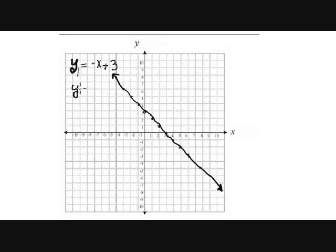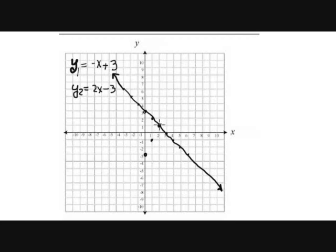The second piece is y2 = 2x - 3. The y-intercept is (0, -3). The slope is positive. Point (1, -1): 2(1)-3 = -1. Point (2, 1): 2(2)-3 = 1. Point (3, 3): 2(3)-3 = 3. So the graph looks like an increasing line.